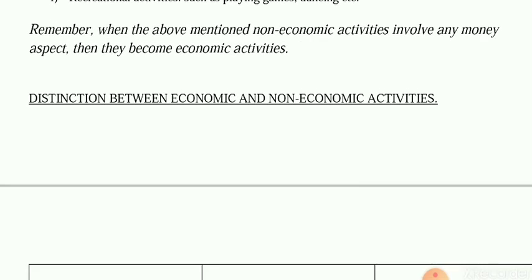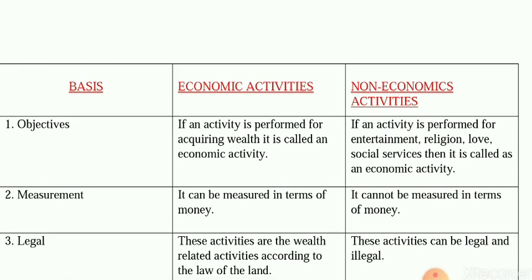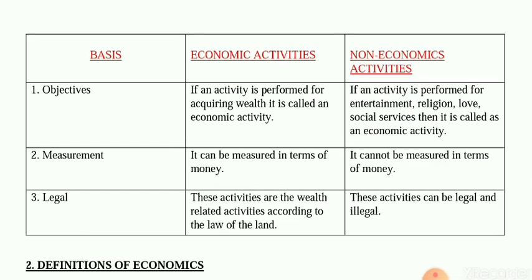Now let us move to the distinction between economic and non-economic activity. We can understand this with the help of a table. There are three bases of distinction: objectives, measurement, and legal aspect. Regarding objectives, the basic objective of economic activity is to earn money and wealth — if an activity is performed for acquiring wealth it is known as economic activity. The objective of non-economic activity is social service, entertainment, religious purposes, or love.